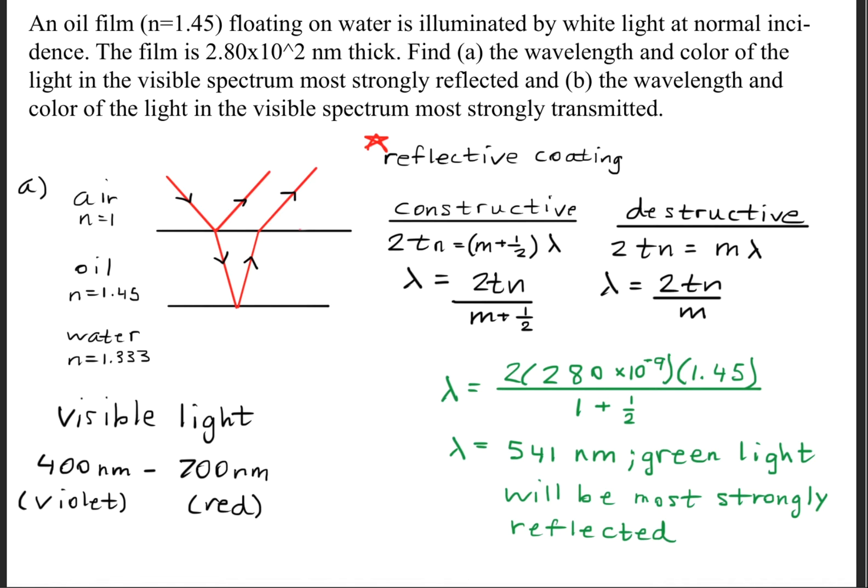This time we find that we get a wavelength of 541 nanometers, and that fits the bill because it falls within the 400 to 700 nanometer spectrum. This is the color green, so green light will be most strongly reflected.